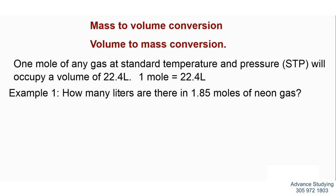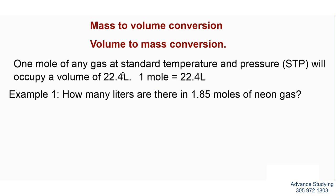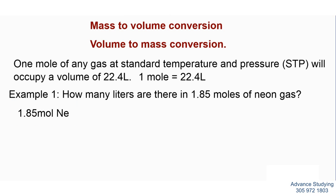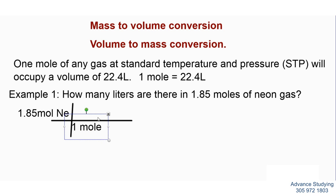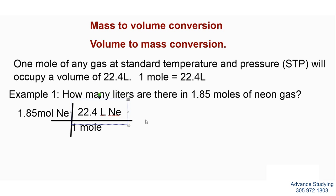Let's do our first conversion. Example one: how many liters are there in 1.85 moles of neon gas? We'll do a regular setup — always begin with what's given, and I'm given 1.85 moles of neon gas. We do our usual cross-multiplication: at the bottom I place one mole (my standard to cancel with), and on top I have the volume standard, 22.4 liters of neon gas.